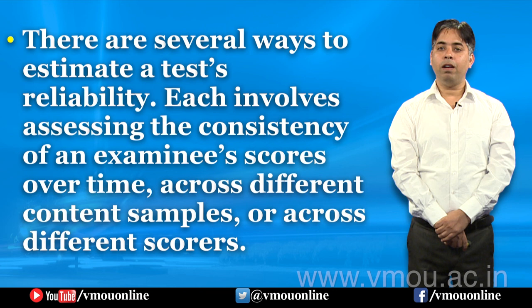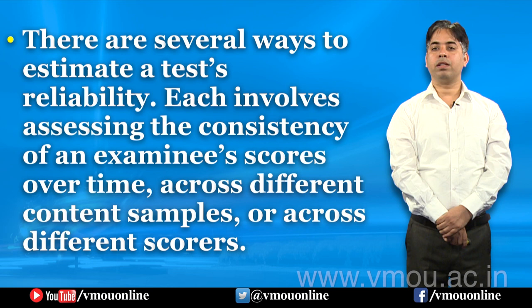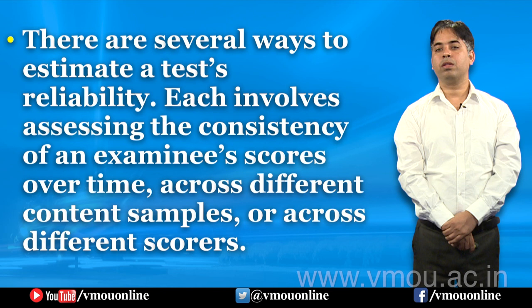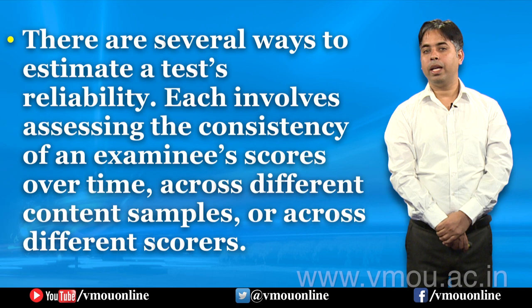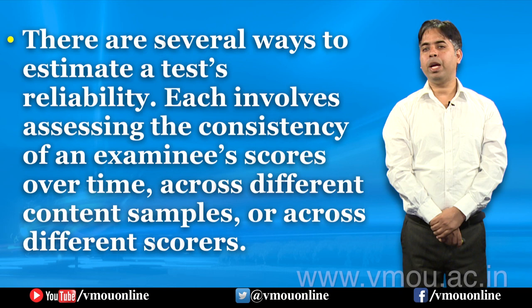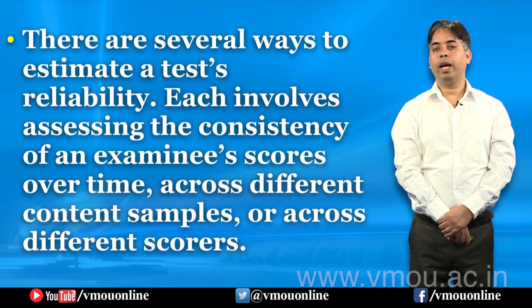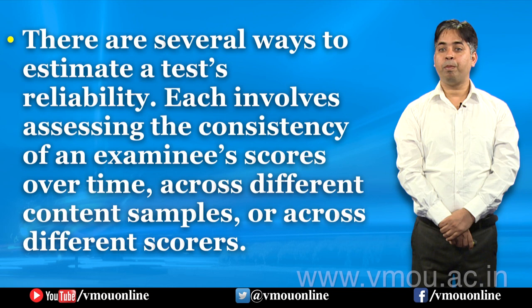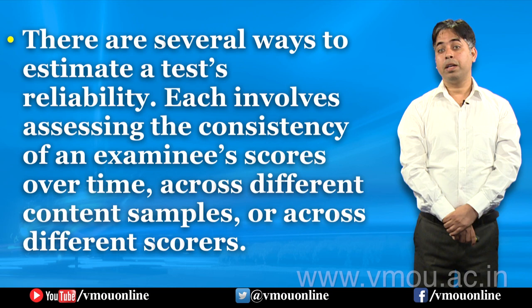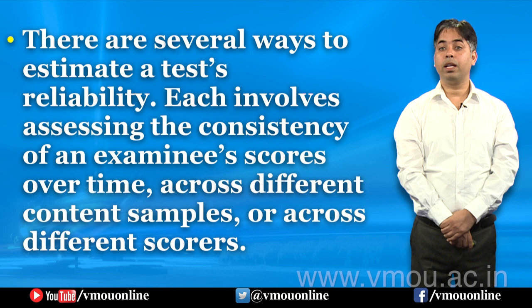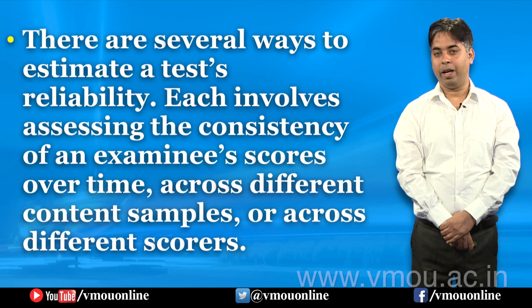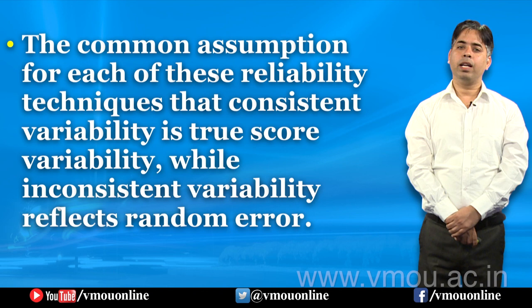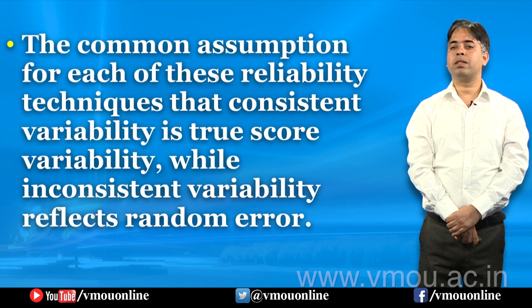There are several ways to estimate a test's reliability. Each involves assessing the consistency of an examinee's score over time, across different content samples, or across different scorers. The common assumption for each of these reliability techniques is that consistent variability is true score variability, while inconsistent variability reflects random error.